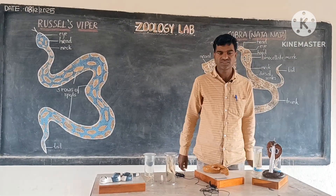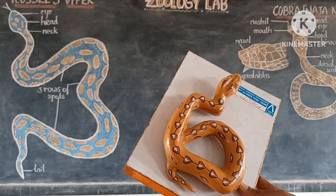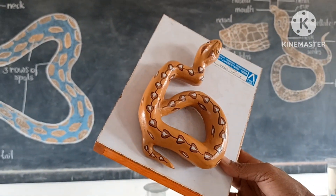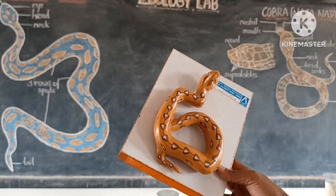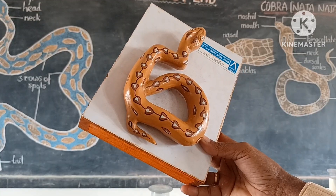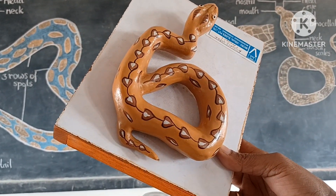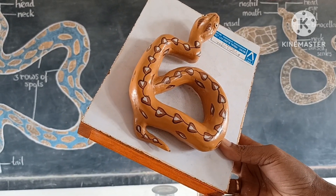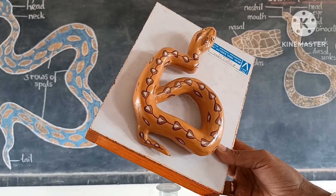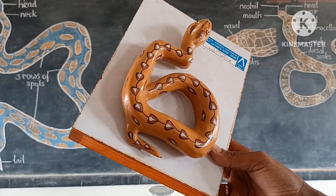We are observing the general characters of these two. This is the specimen of Viper, commonly called Russell's Viper. The body of Russell's Viper can be distinguished into head, neck, trunk, and tail. The head is large, flat, triangular, and covered with small scales. Eyes are without eyelids and have white margins with golden iris and elliptical pupils. The body is covered with three rows of diamond-shaped spots on the dorsal side in the form of a chain. The neck is conspicuous, separating the head and body. There is no loreal pit between the nostrils and eyes. The tail is narrow and pointed.